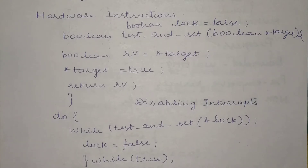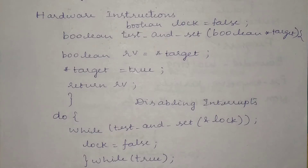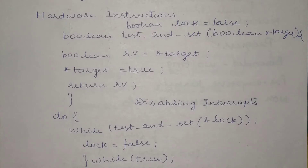In case of a single processor or uniprocessor system, if you are working with the critical section problem, you may encounter it whenever you receive an interrupt. But if you disable that interrupt, then automatically the critical section problem will not occur. If you do not disable the interrupt, it will enter and may change the order of execution of instructions of whichever process is currently executing — making it interruptable and producing incorrect output. So in order to avoid this in a single processor system, we can disable the interrupt and not allow it to execute.